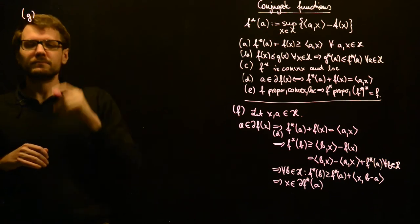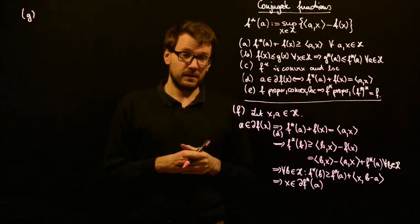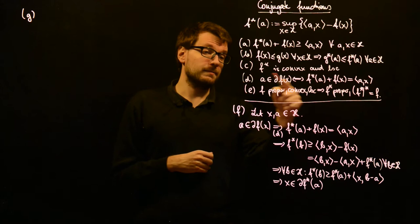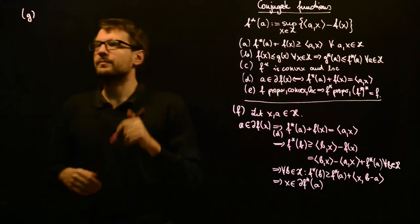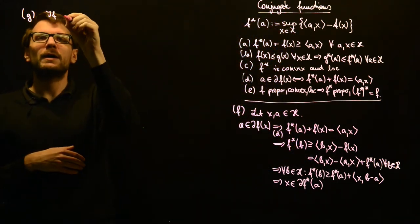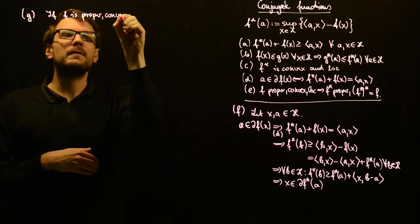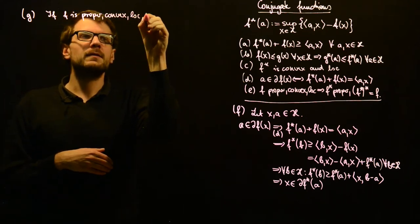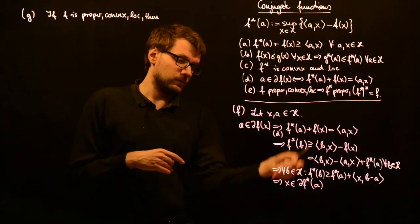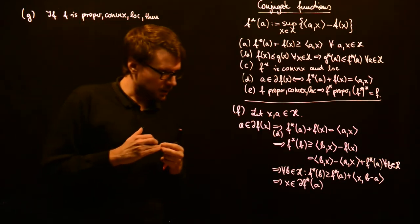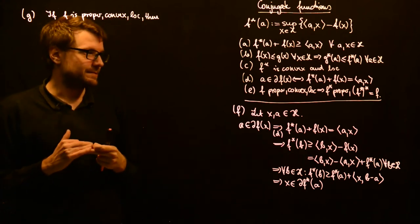Property G will deal with the case that f is proper, convex, and lower semicontinuous, as we assumed in property E. If f is proper, convex, lower semicontinuous, then we actually have the equivalence between those properties. This is shown by using properties D and E, and in particular, E is necessary.